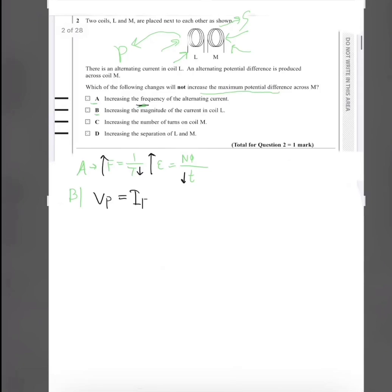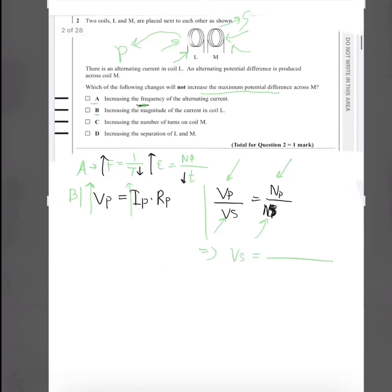Part B — increasing the magnitude of current in coil L: if we increase the current in the primary coil, the voltage across the primary coil increases. Using the formula Vp/Vs = Np/Ns, when we make Vs the subject, Vs = Vp × Ns / Np. Since voltage in the primary coil increases and Np and Ns stay constant, the voltage across the secondary coil increases. So it will increase — the answer is not B.